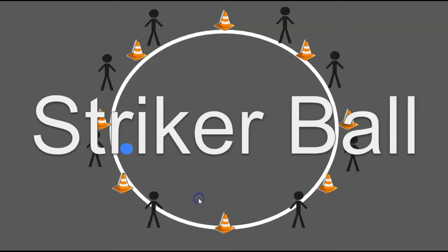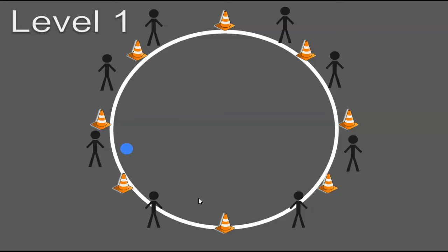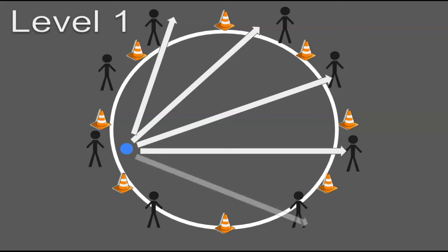Today's game is called Striker Ball. With Striker Ball Level 1, you'll be able to slap the ball, but you cannot slap it to the person on your left or the person on your right. You cannot get any points that way. So when you have the ball, you can slap it to all the people that are across from you.